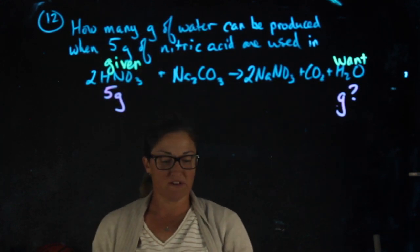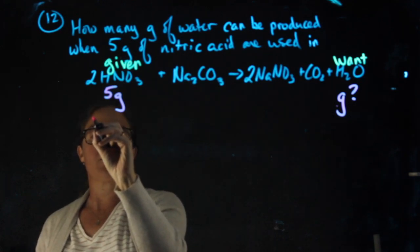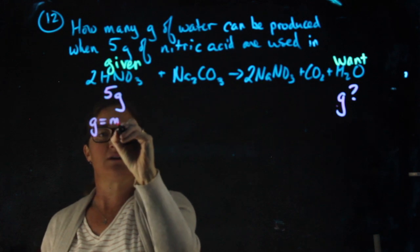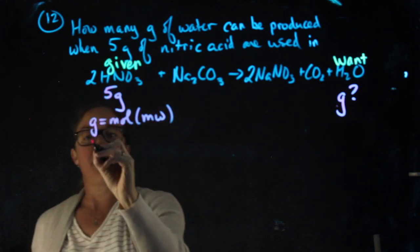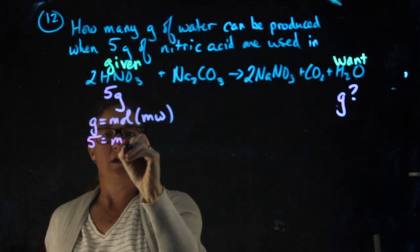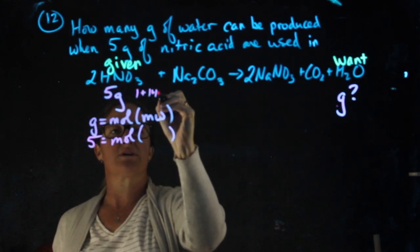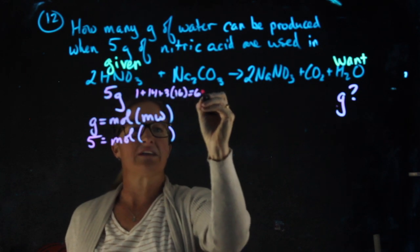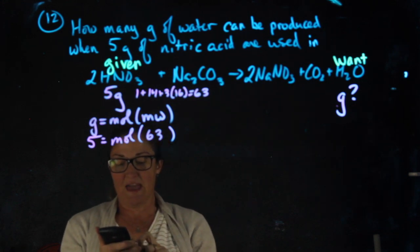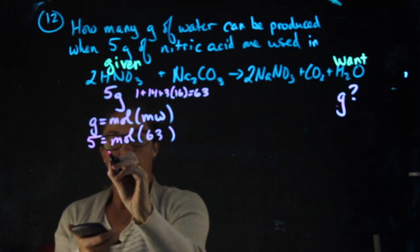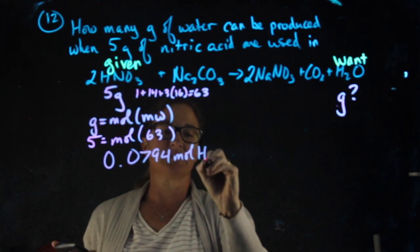I'm going to start by getting the moles of nitric acid. For nitric acid, I have 5 grams. I'm going to use grams equals moles times molecular weight. 5 equals moles times the molecular weight of HNO3, which is 1 plus 14 plus 3 times 16, or a grand total of 63. In my calculator, 5 divided by 63 is 0.0794 moles HNO3.